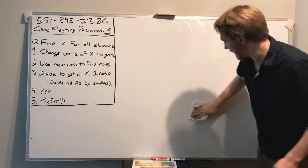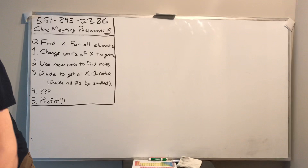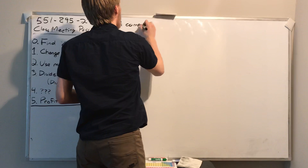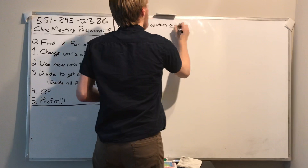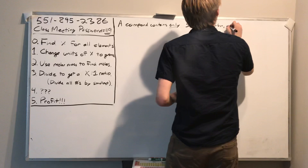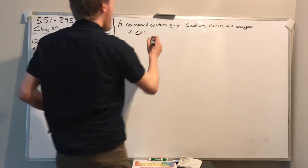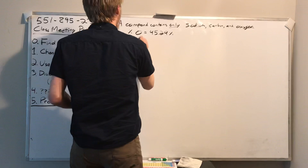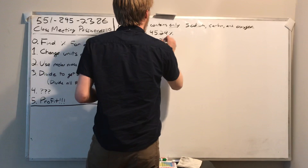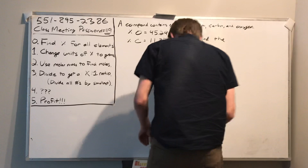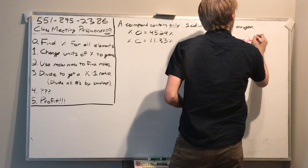Here's my second question: I have a compound that contains only sodium, carbon, and oxygen. The percent of oxygen is 45.29%, the percent of carbon is 11.33%, and we want to find the formula for this compound.